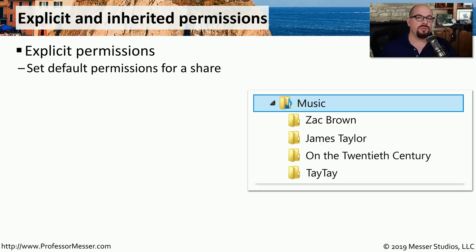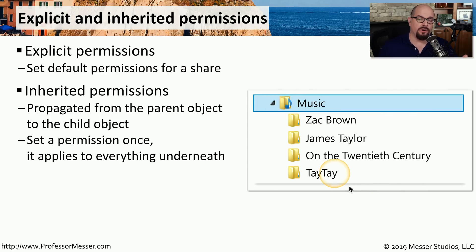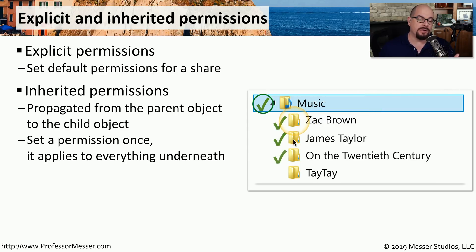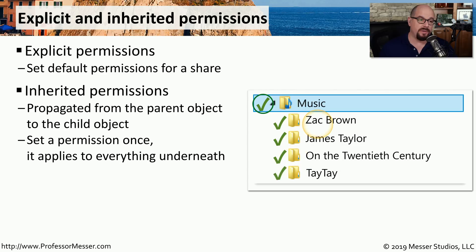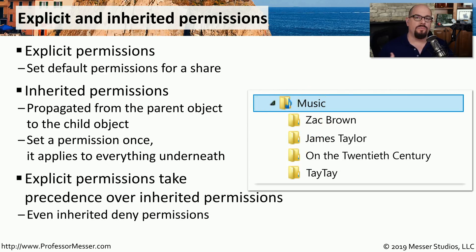Permissions associated with a file can be inherited from a parent object. If you manually change the permissions for a file in the file system, those are called explicit permissions. For example, a music folder would have parent permissions and the folders underneath would have child permissions. If you set permissions on the music folder to allow access, you won't have to visit each individual child folder, because all permissions are inherited from the parent. We can override inherited permissions by changing them ourselves, making them explicit permissions.